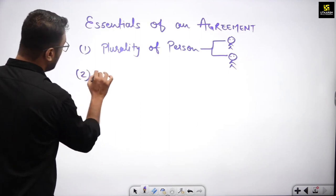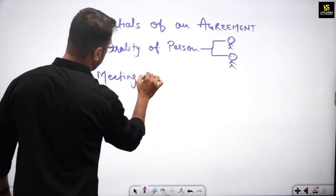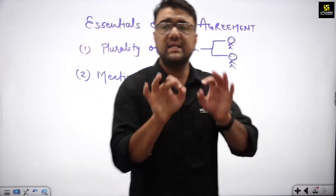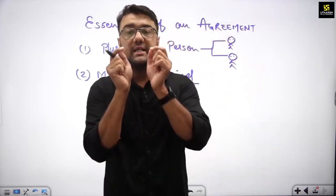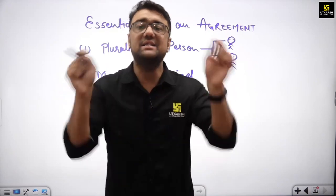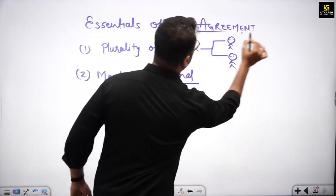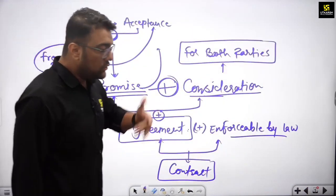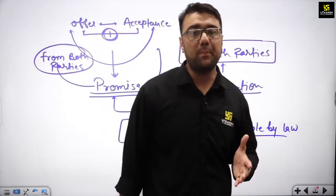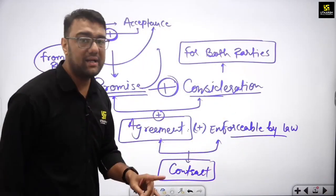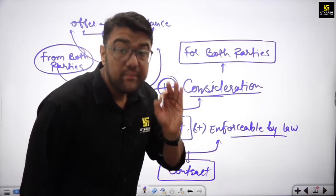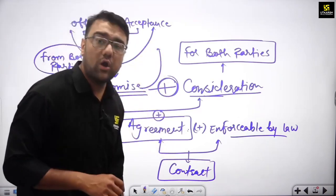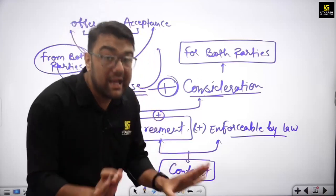The second point is: meeting of mind — meaning both their minds must discuss the same point. Both of them agree in the same sense on a particular subject matter — then an agreement is produced. Suppose one party is thinking something else and the other party is thinking on a different particular point, then that thing will not be considered an agreement.